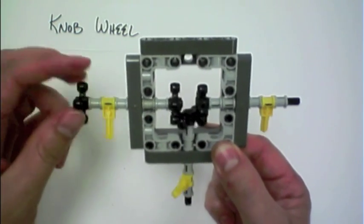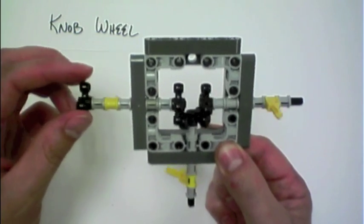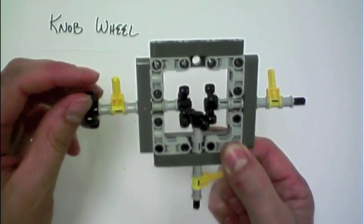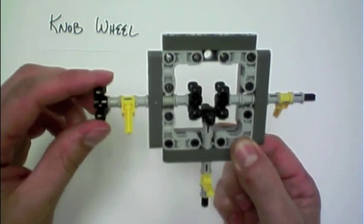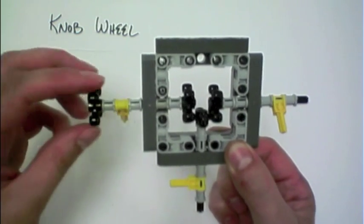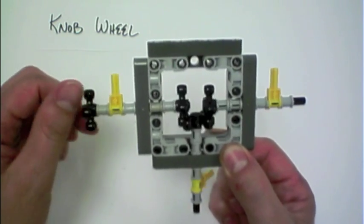So using these knob wheels can be a little trick in order to get motion to reverse direction in line somewhere in the middle of your device.